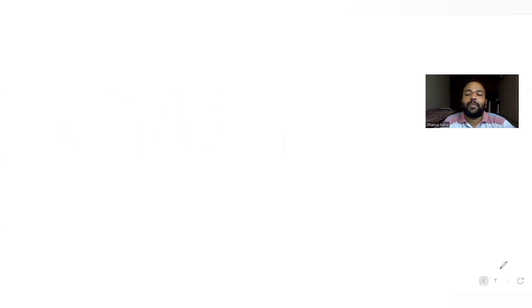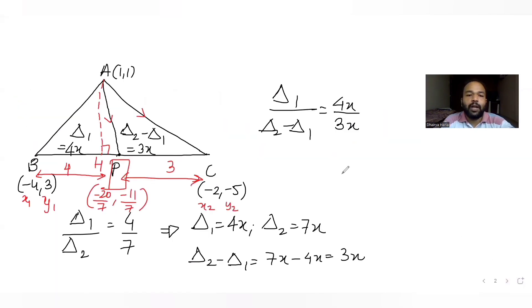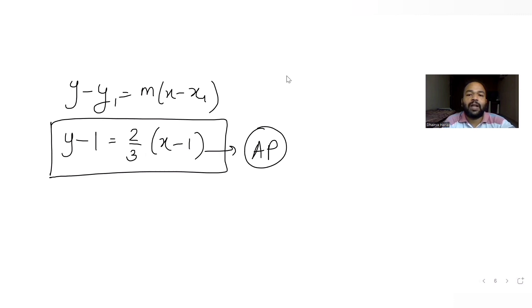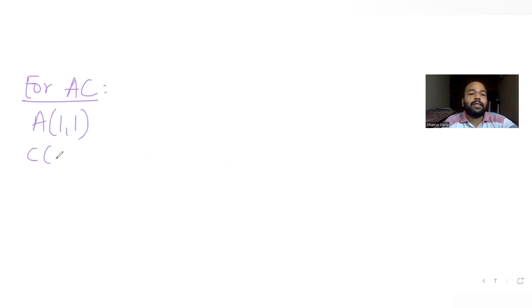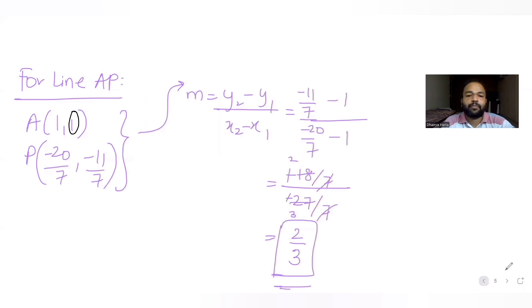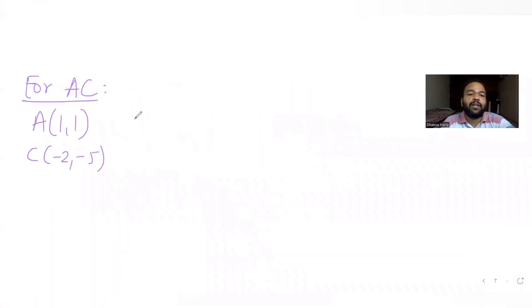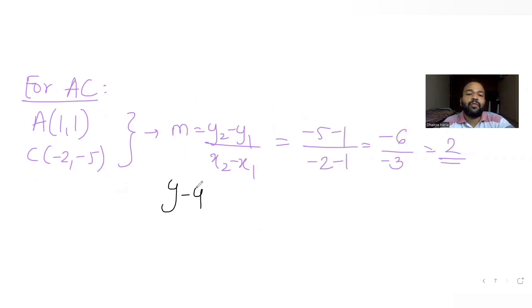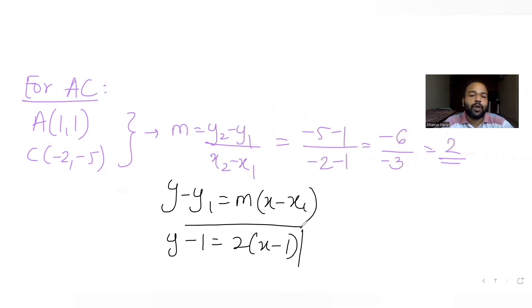For line AC, A is (1,1) and C is (-2,-5). The slope is (-5 - 1)/(-2 - 1) = -6/-3 = 2. Using point-slope form: y - 1 = 2(x - 1). This is the equation of line AC.